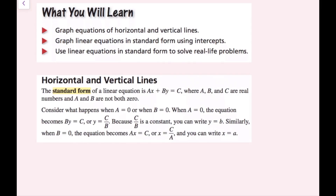Consider what happens when a equals zero, or when b equals zero. When a equals zero, the equation becomes by equals c, or y equals c over b. And that is because if a is zero, the whole term drops out. Because c over b is a constant, you can write the equation as y equals lowercase b.